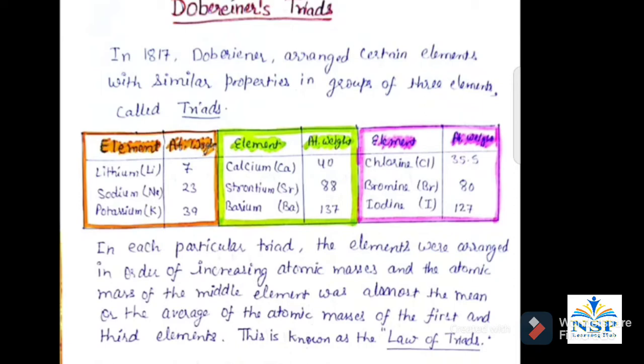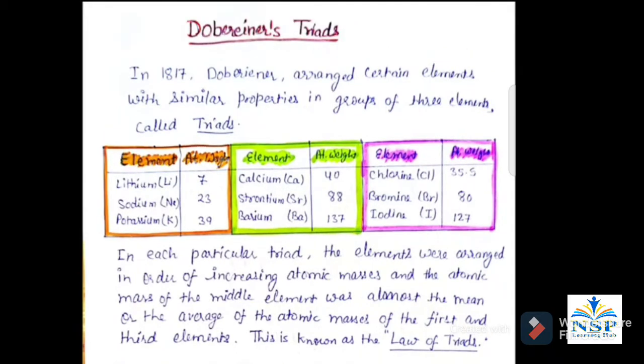Dobereiner gives three triads of elements. In the first triad, he put lithium, sodium, and potassium together. In the second triad, he put calcium, strontium, and barium together. In the last triad, he put chlorine, bromine, and iodine. According to his triads, Dobereiner gives the Law of Triads, in which within each particular triad the elements were arranged in order of increasing atomic masses.